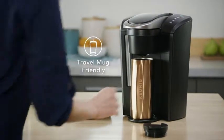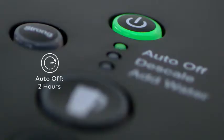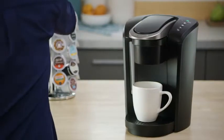Simply remove the drip tray to accommodate a travel mug. The programmable Auto-Off turns the brewer off automatically two hours after the last brew, helping to save energy.